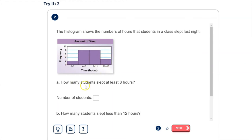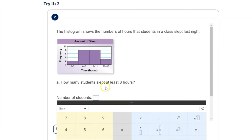So the question being, how many students slept at least 8 hours? Well, we can see that this category, 8 to 11, and this category, 12 to 15, would have been people who slept at least 8 hours. So that would be 8 plus 3, which is 11 students.